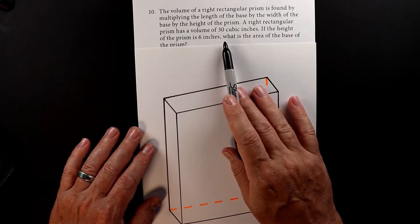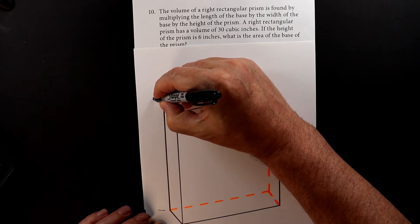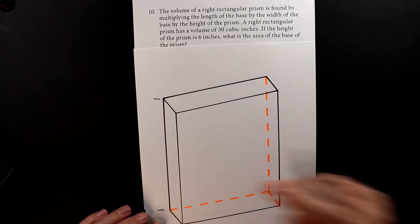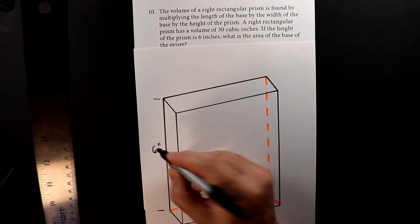If the height of the prism is six inches, so from here to here, let's make this look nice. So that's six inches.